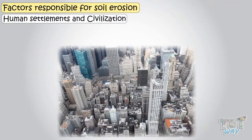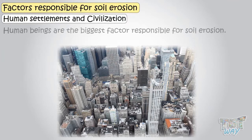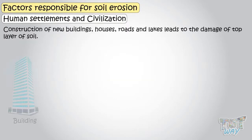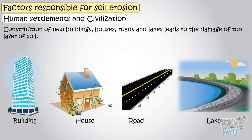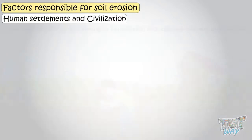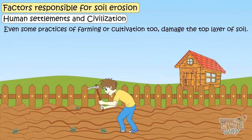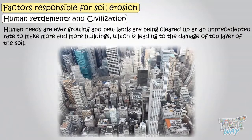Human settlements and civilization — humans are the biggest factor responsible for soil erosion. Construction of new buildings, houses, roads, and lakes leads to damage of the top layer of soil. Even some farming or cultivation practices damage the top layer of soil. Human needs are ever growing and new lands are being cleared at an unprecedented rate to make more and more buildings, all leading to damage of the top layer of soil.